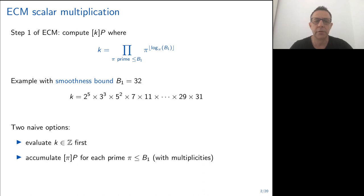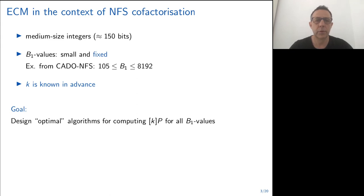As you can see on the example, if we pick B1 is 32, then the scalar k is going to be 2^25 times 3^3 times 5 squared times then all the primes up to 31. In order to compute k times P, we can think of two rather naive options. The first one is to evaluate the integer k and then compute the scalar multiplication k times P. Or we can take the primes one after the other and accumulate the result in the current point.